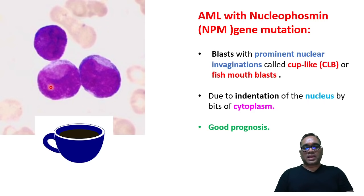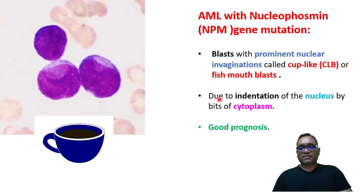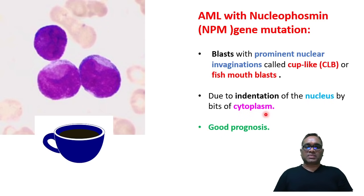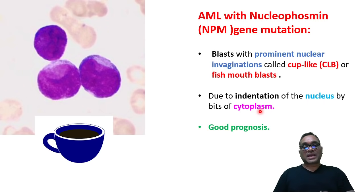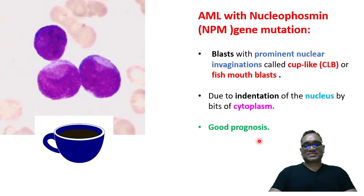You can see this cup-like structure — cup-like blast or fish mouth — because of the indentation of the nucleus by the buds of the cytoplasm. This type of AML with nucleophosmin gene mutation will carry a good prognosis. Enjoy learning pathology and best wishes.